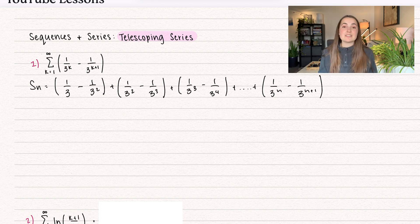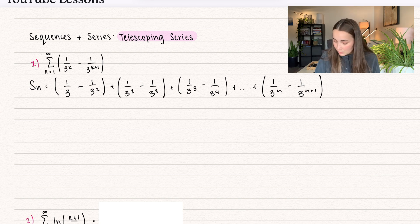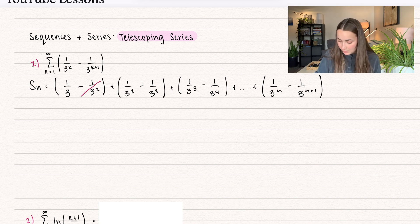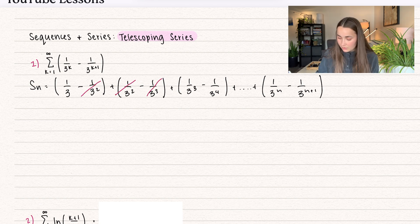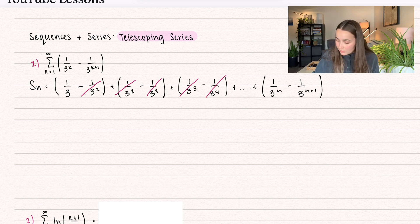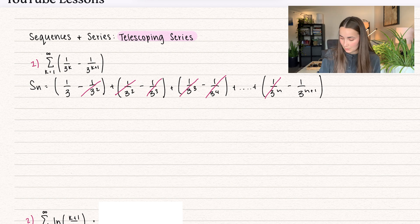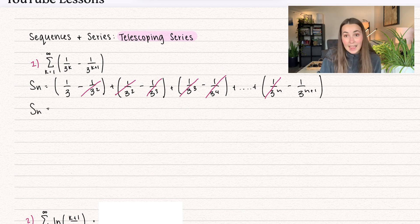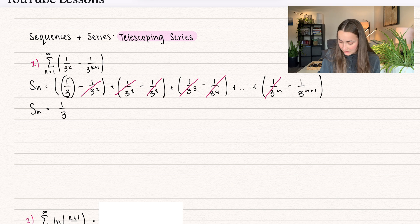With the telescoping series, what's happening is that terms are canceling out. Notice we get minus 1 over 3 squared plus 1 over 3 squared, and minus 1 over 3 cubed plus 1 over 3 cubed. So all of these terms in between are forever going to cancel out. That's why it's called a telescoping series.